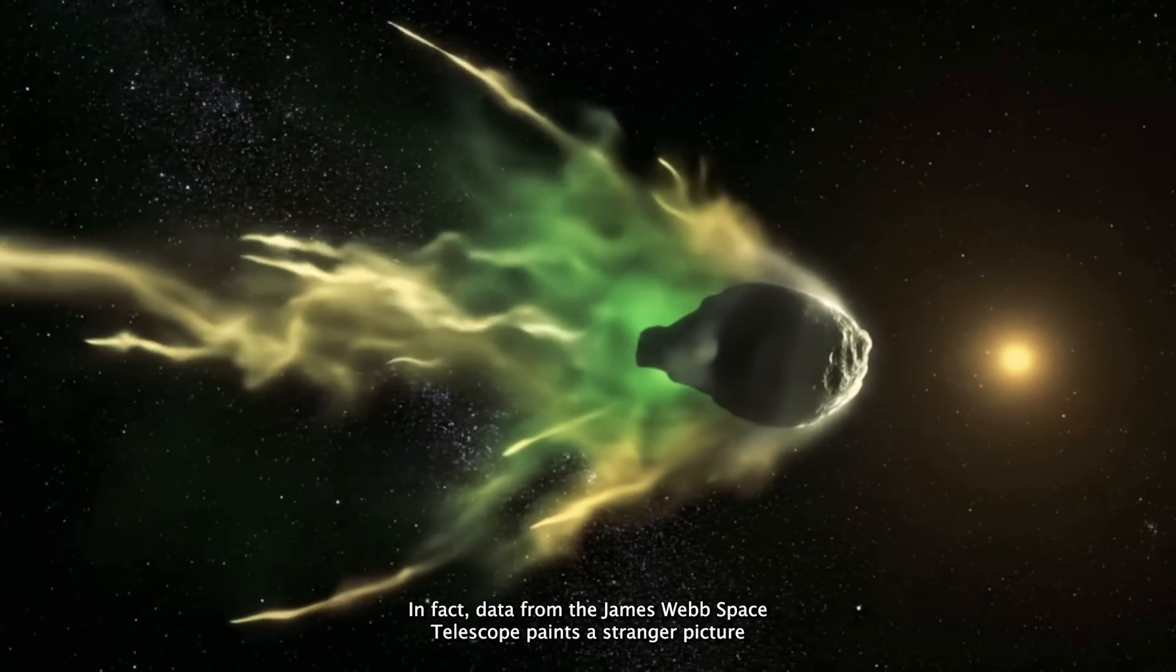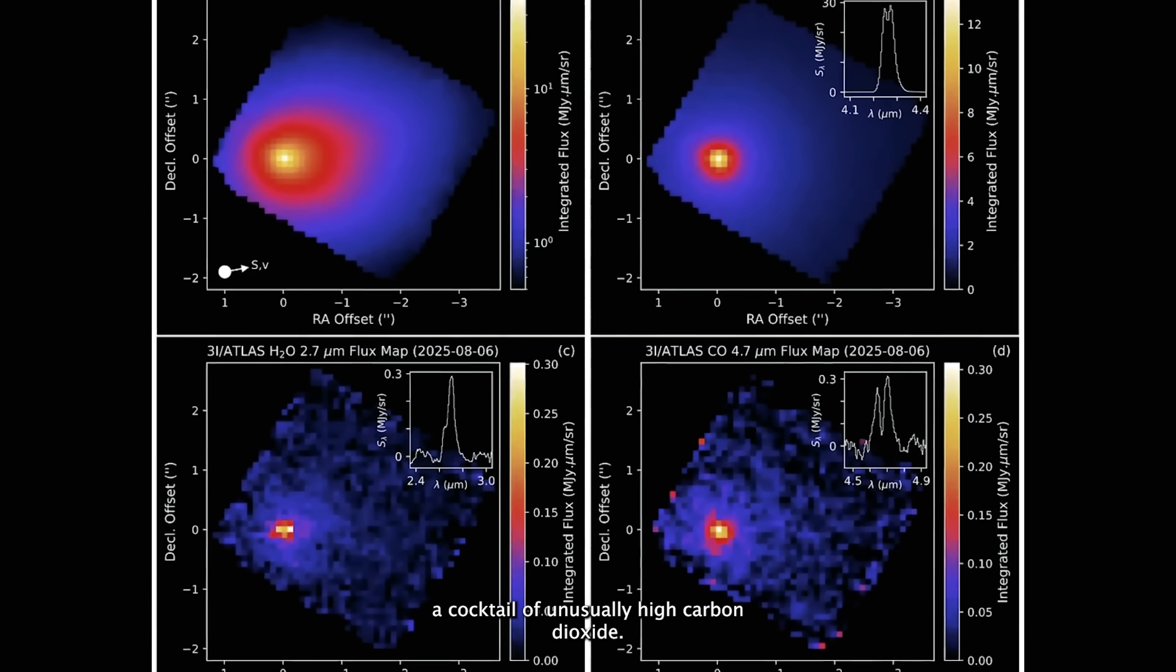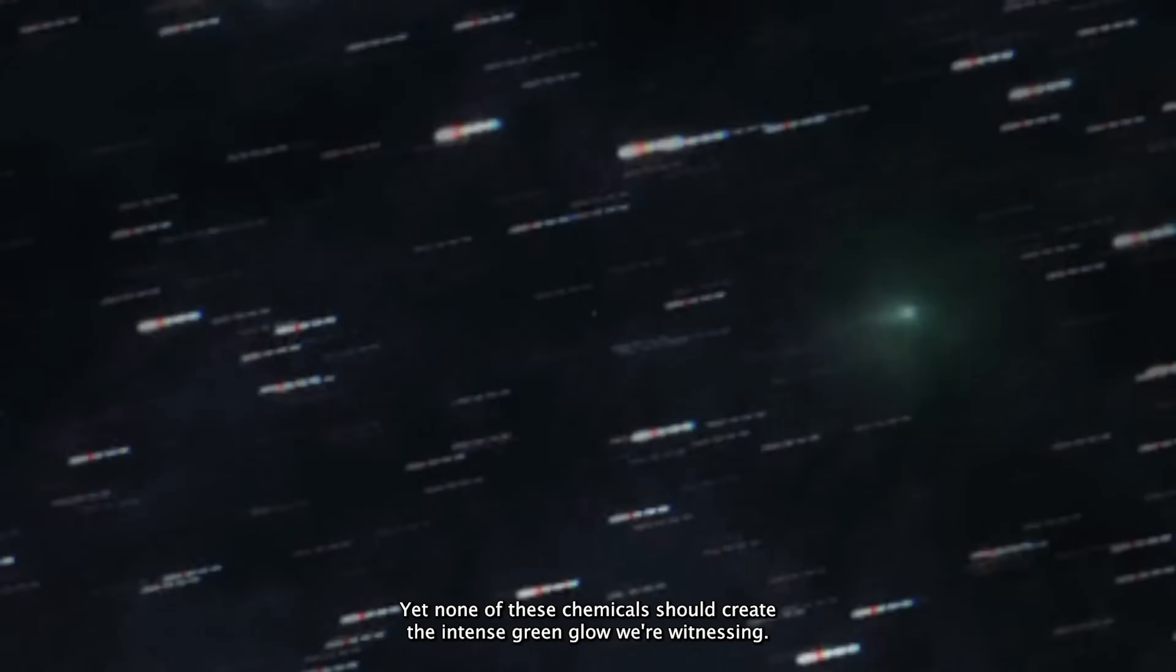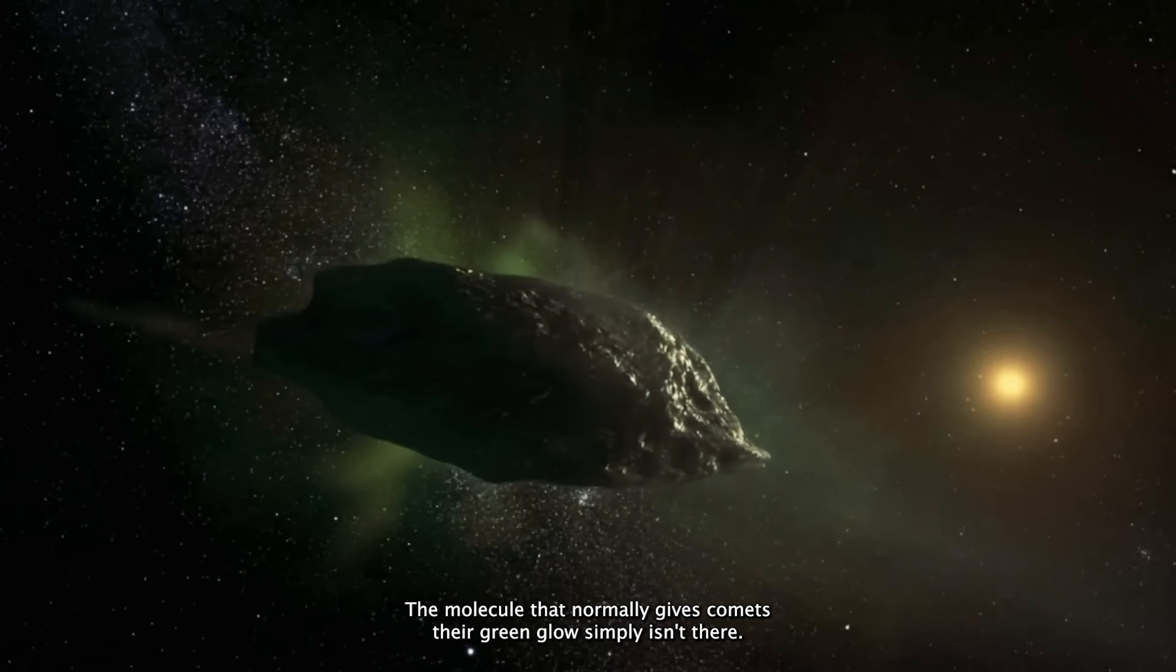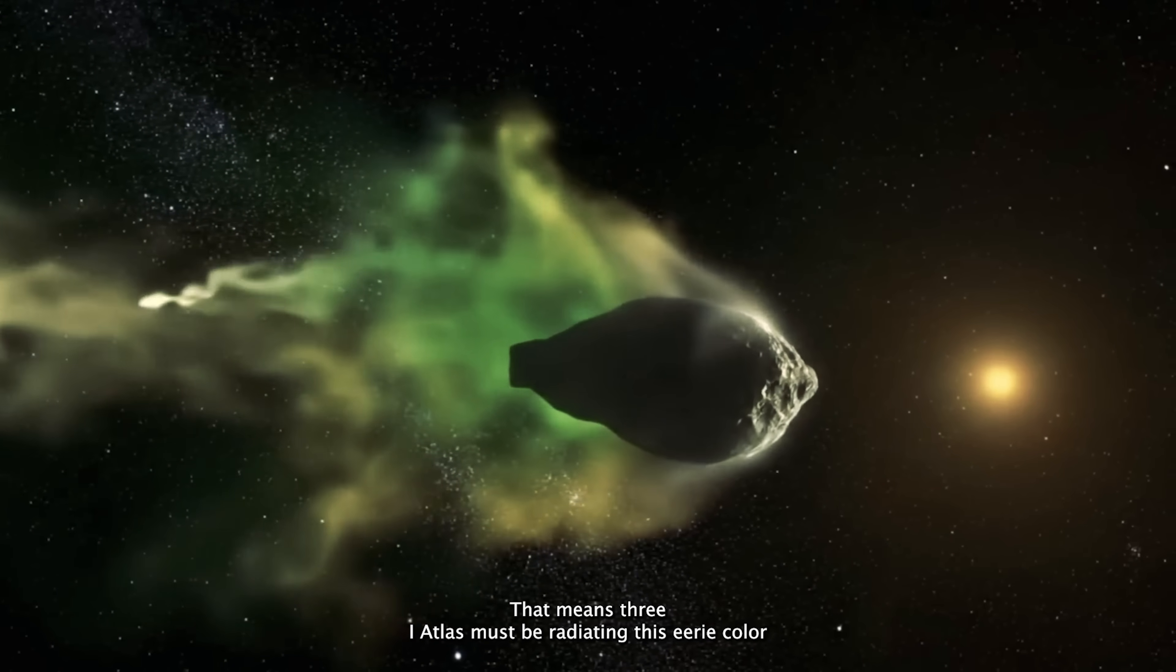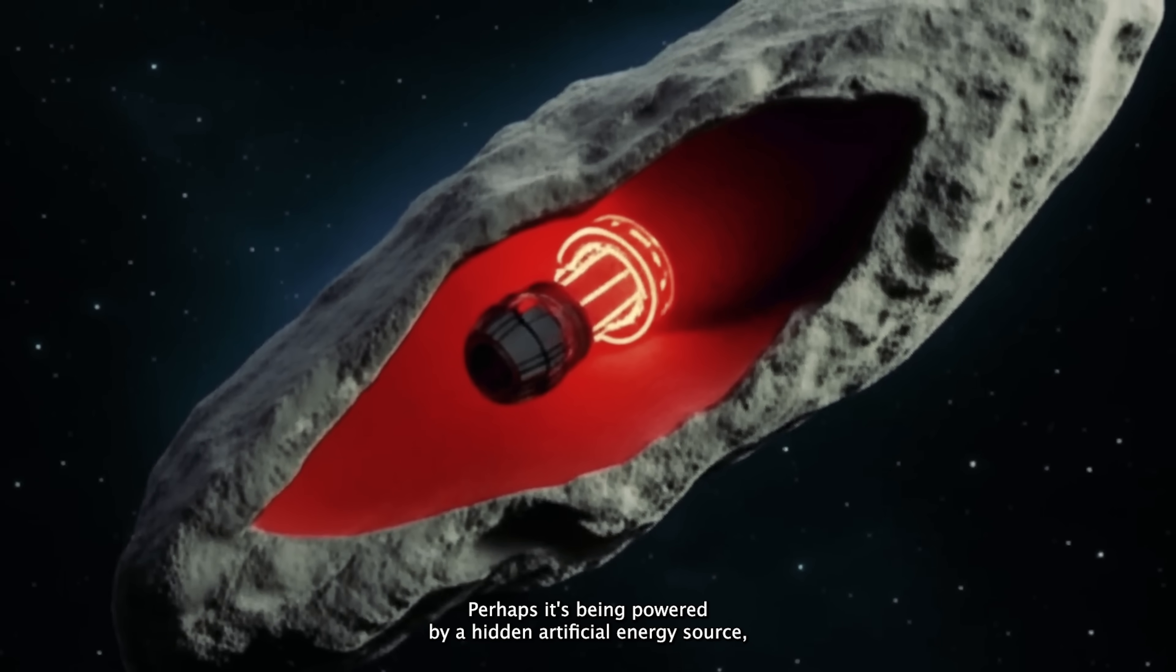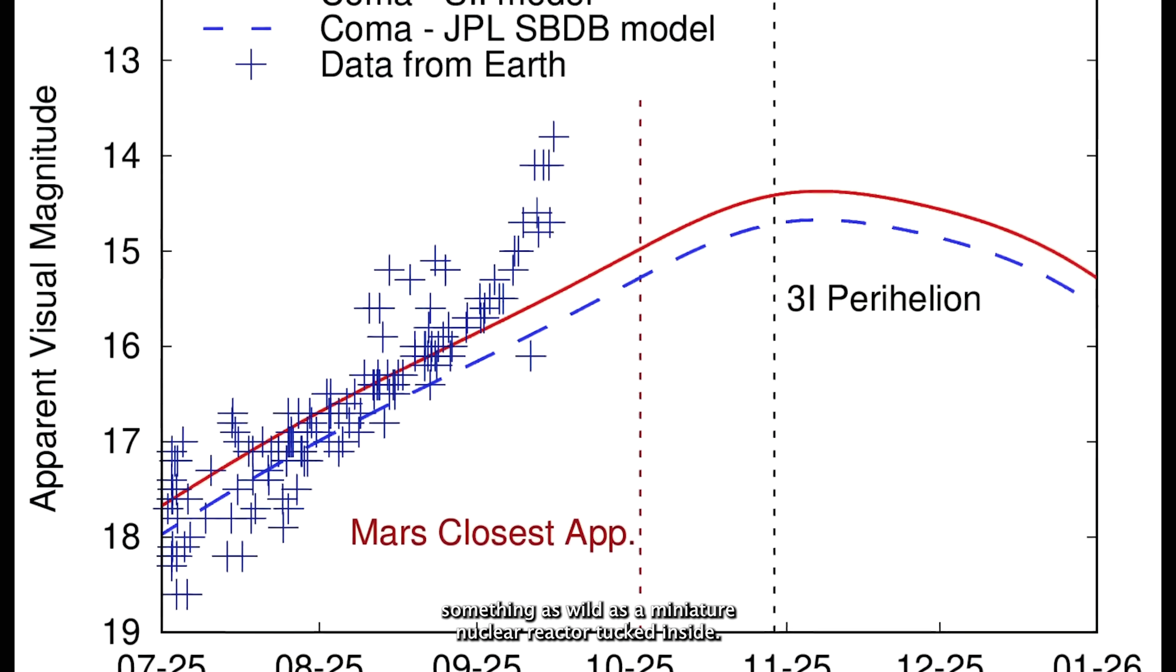In fact, data from the James Webb Space Telescope paints a stranger picture. A cocktail of unusually high carbon dioxide, plus traces of nickel and cyanogen. Yet none of these chemicals should create the intense green glow we're witnessing. The molecule that normally gives comets their green glow simply isn't there. That means 3i Atlas must be radiating this eerie color because of some unknown gas. Or, as a handful of bold scientists suggest, perhaps it's being powered by a hidden artificial energy source. Something as wild as a miniature nuclear reactor tucked inside.